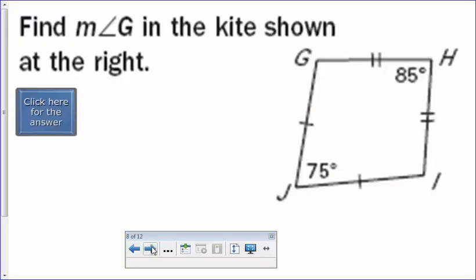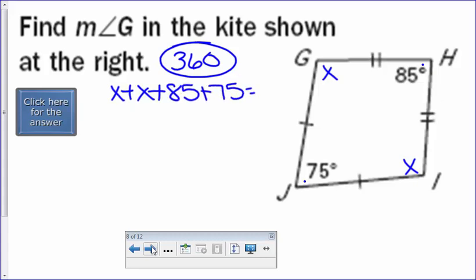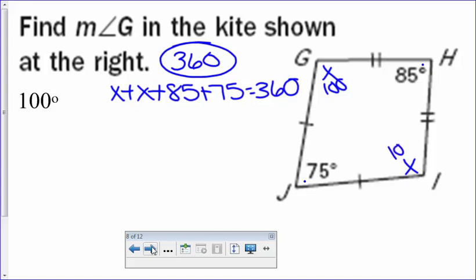Let's do some kite problems. The first one is finding the measure of angle G. So I'm going to put an X there. We don't have all four of the angles, but if you remember, one pair of opposite angles are congruent. I have 75 and 85. Those aren't the pair, so I know that G and I are opposite congruent angles. So I'm going to label that X too. A kite and all these are part of the quadrilateral family. The angles equal 360. X plus X plus 85 plus 75 equals 360. When you solve that equation, you should get the measure of angle G to be 100 degrees.